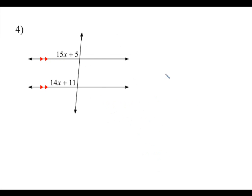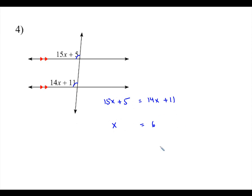In number four, we have an example of corresponding angles. The lines are parallel, so we know corresponding angles are congruent. So 15x plus 5 is going to equal 14x plus 11. If we minus 14x on both sides, we're left with x. Minus 5 on both sides, so we get 6.